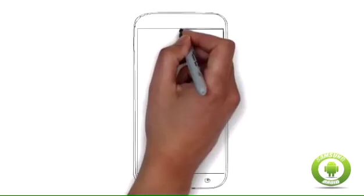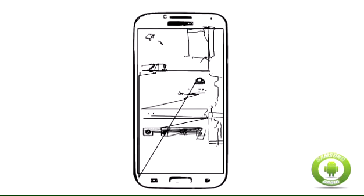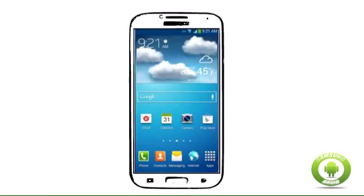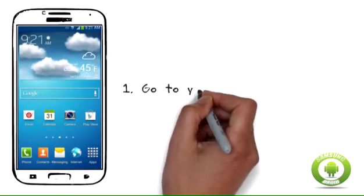Step 1. Go to your S4 Home Menu by pressing the Home button. This is the rectangular button located on the lower middle part of the front of your Samsung Galaxy S4.